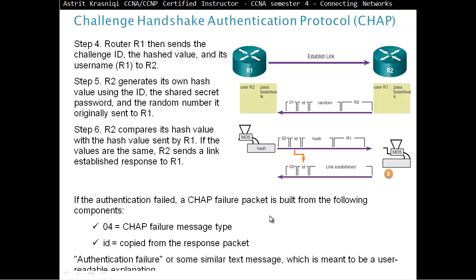If authentication failed, a CHAP failure packet is built from the following components: code 0x04 (CHAP failure message type), the ID copied from the response packet, and an 'Authentication failure' or similar text, which is meant to be a user-readable explanation.